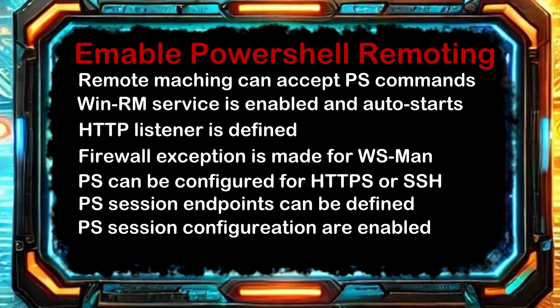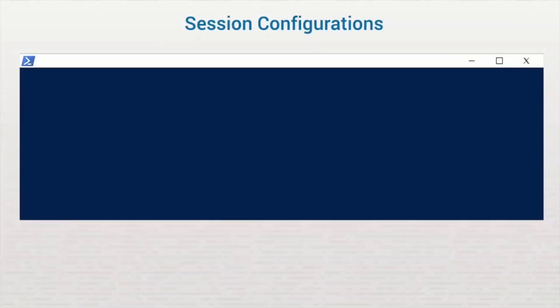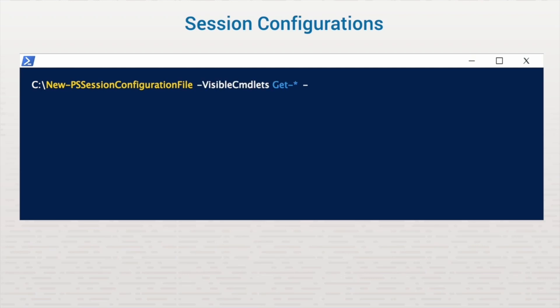The final task of the cmdlet is to define the PowerShell session endpoints and enable session configurations. Session configurations are the settings on the computer that define the environment for PowerShell sessions. These configurations are used by the administrator to protect the computer and prevent unauthorized access. The administrator can define custom environments and permissions for remote users, including specifying which cmdlets can be used, limiting the size of objects the computer receives, and more. Session configurations are stored in special text files called session configuration files.